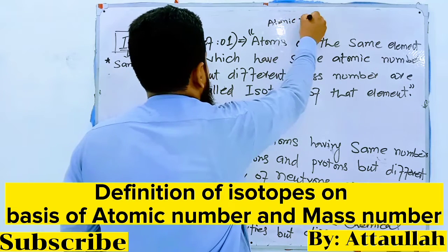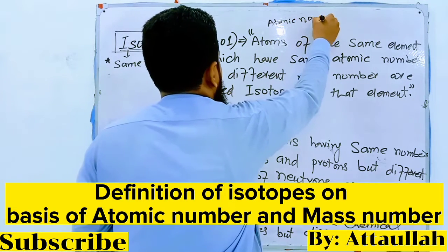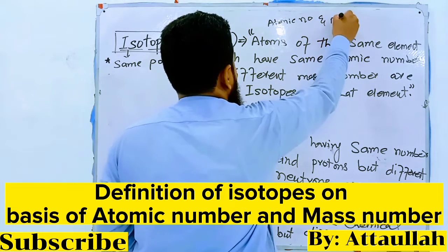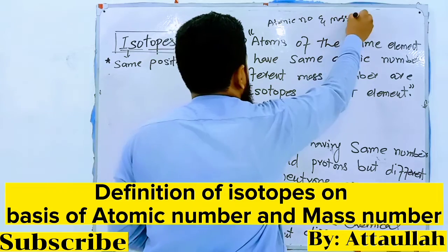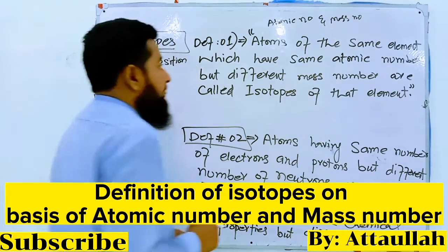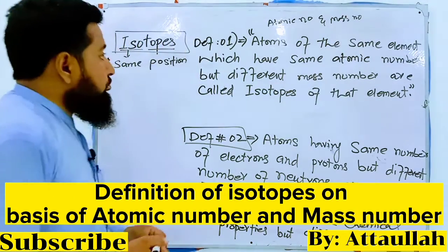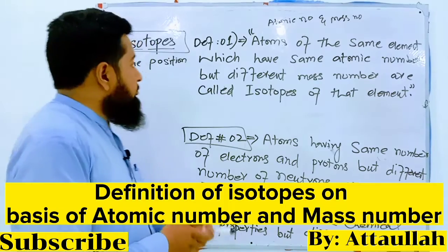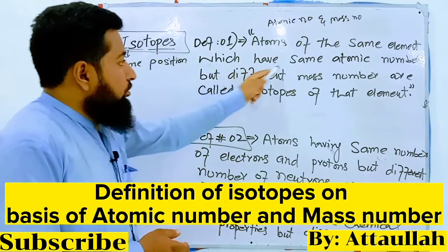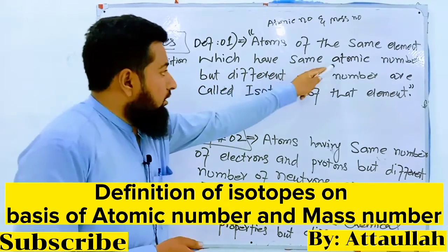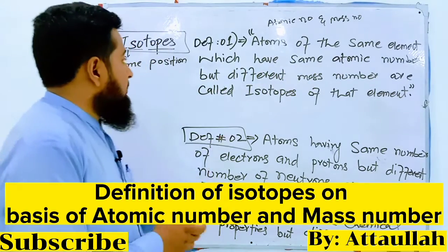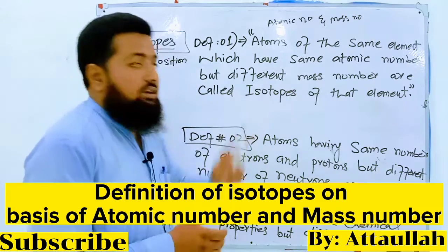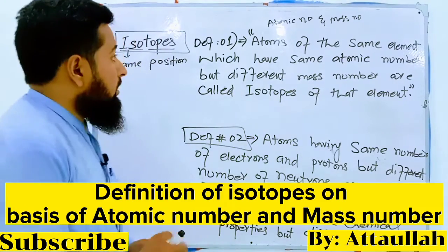Isotopes are atoms of the same element which have the same atomic number but different mass number.